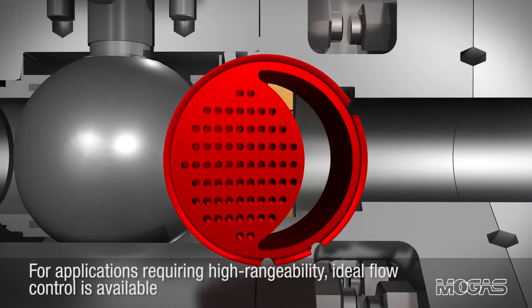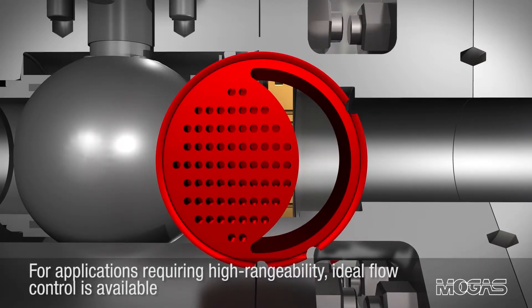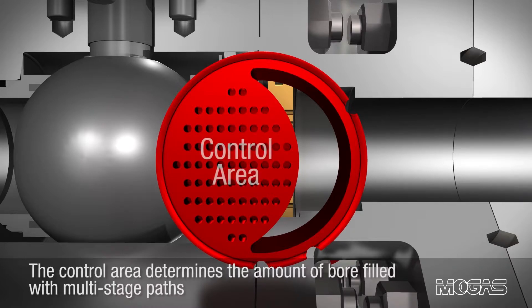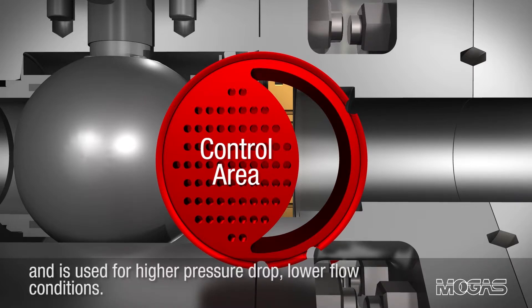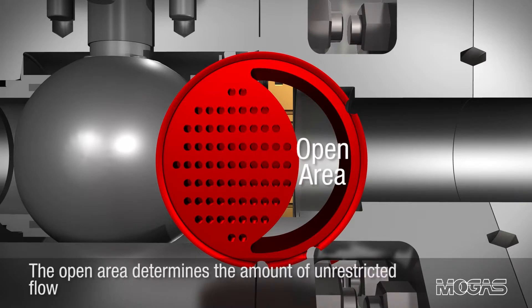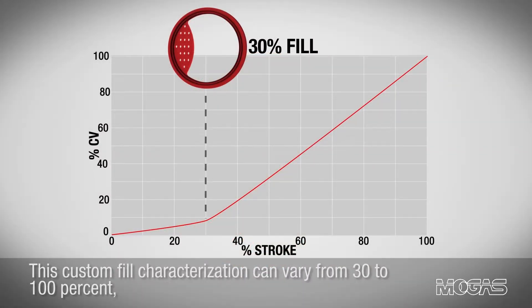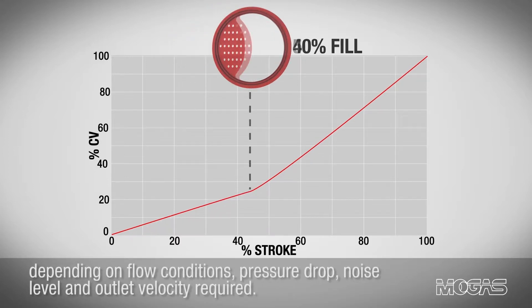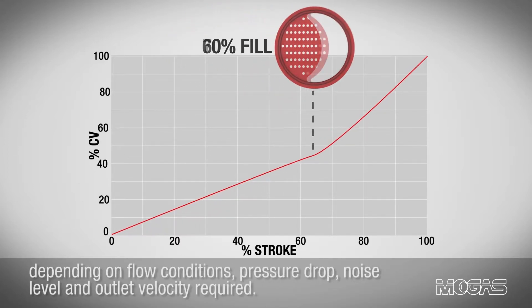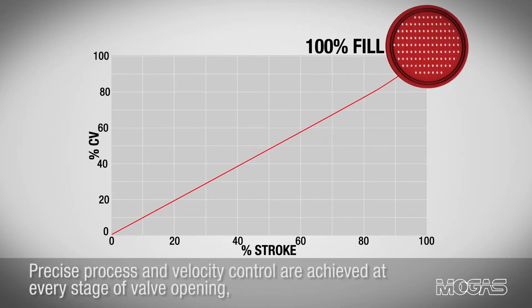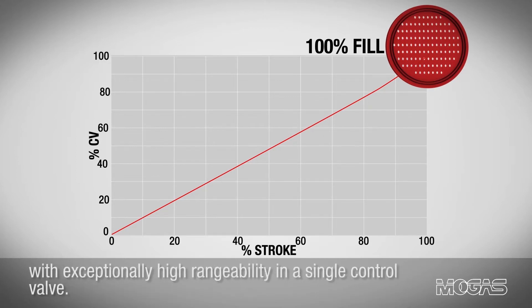For applications requiring high rangeability, ideal flow control is available by varying the combination of control area and open area within the trim. The control area determines the amount of bore filled with multi-stage paths and is used for higher pressure drop, lower flow conditions. The open area determines the amount of unrestricted flow and is used for lower pressure drop, higher flow conditions. This custom fill characterization can vary from 30 to 100 percent depending on flow conditions, pressure drop, noise level, and outlet velocity required. Precise process and velocity control are achieved at every stage of valve opening with exceptionally high rangeability in a single control valve.